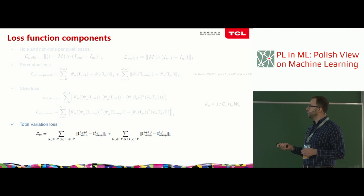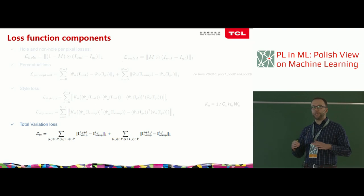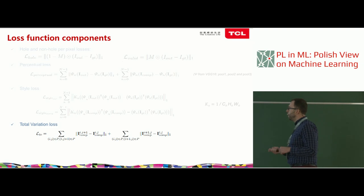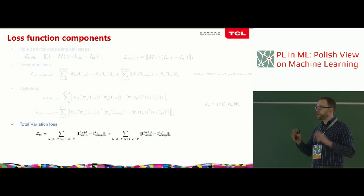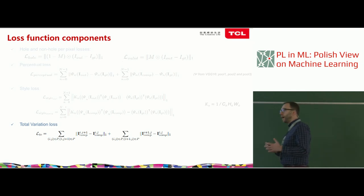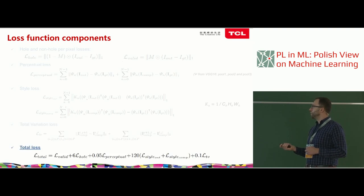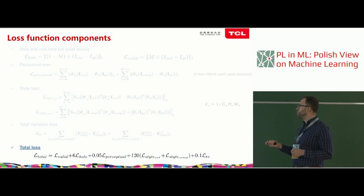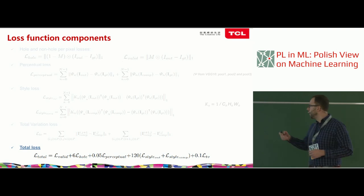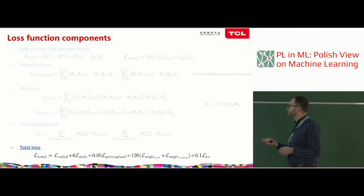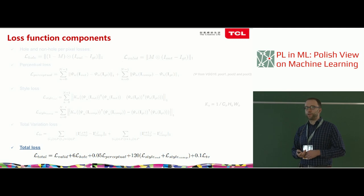Perceptual loss and style loss are also used in other problems like style transfer, and are more in line with human perception than simple reconstruction error. The last component is total variation loss — a penalty for non-smooth output, calculated in the area P, which is the mask slightly enlarged by a dilation operation — enforcing smooth output inside the mask and on the boundary. The total loss is a weighted sum of all components. The weights are taken from the paper but depend on your data and model; you must tune them and monitor each component's contribution during training.